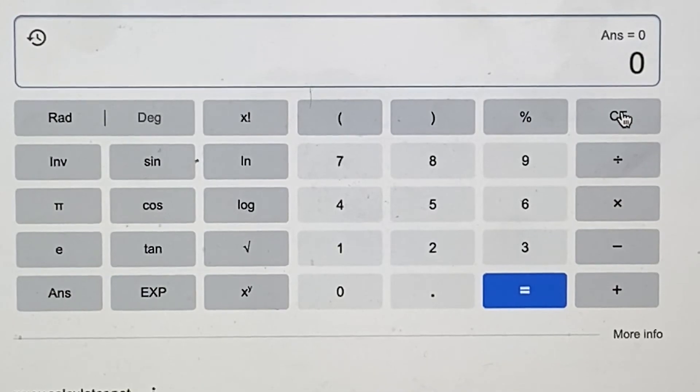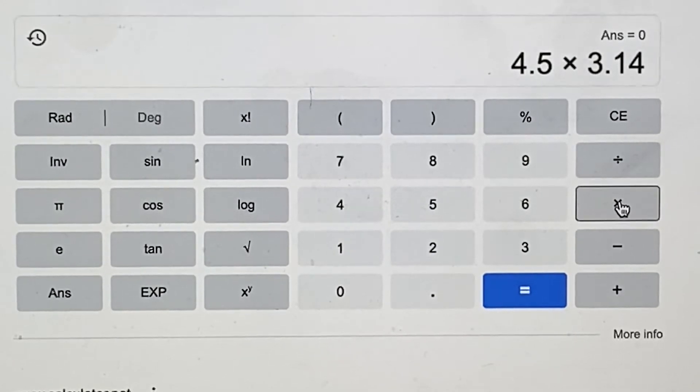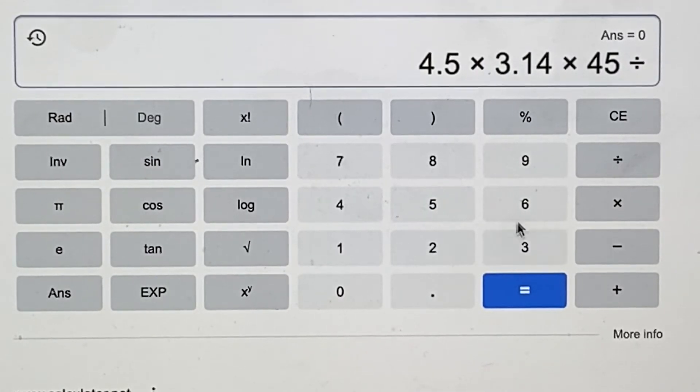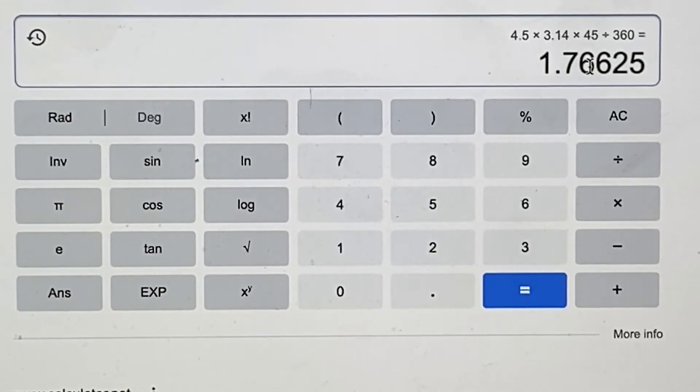Okay, so let's pull out the calculator and see what we get. So we have 4.5 times 3.14, which is pi, times 45 degrees, which is our angle, divided by 360 degrees. And we get 1.76 inches. You can round it up to about 1.77 or 1.8 inches.